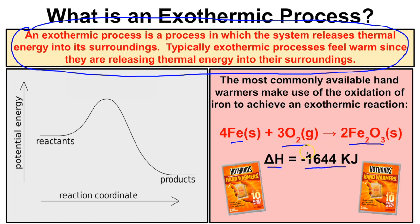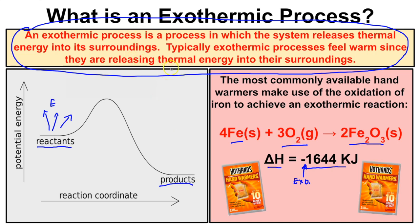Because the sign of delta H is negative, this chemical reaction is going to release 1644 kilojoules — an exothermic process — and we can use that heat to keep our hands warm during cold winter months. On a graph of an exothermic process, the reactants have relatively high potential energy and the products end up with relatively low potential energy, meaning the reactants release thermal energy into the surroundings to reach that lower energy state.